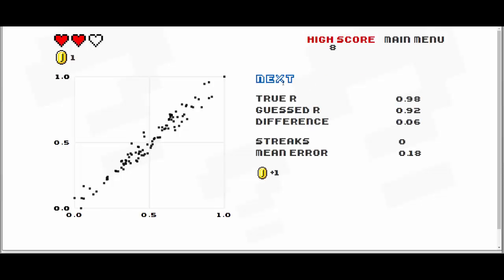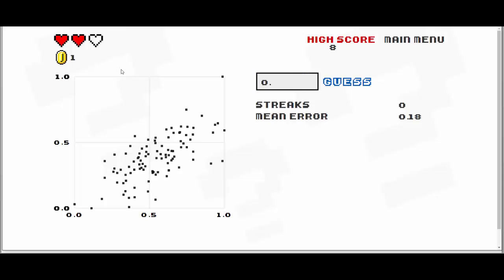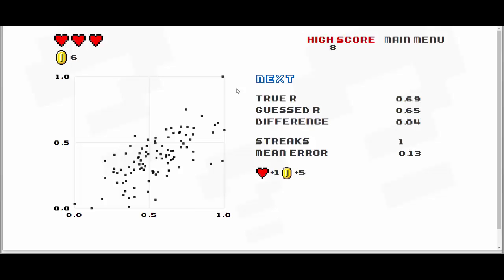And lo and behold, I was pretty close. The true R was 98, so I got a coin. If you get actually really close to the actual value, you'll gain one of your lost lives back. I'm going to hit enter again. I don't know, let's guess maybe 65% here. And I was close. The true R was 69%, so I got one of my hearts back and I got five coins for a score of six, and I'll play again.